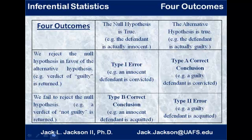You could also have a type B correct conclusion: if the defendant is actually innocent and a not guilty verdict is returned, that's also good. If the null hypothesis is true and we fail to reject it, that's a type B correct conclusion — an innocent defendant is acquitted. So type A correct conclusion is when the alternative hypothesis is actually true and we reject the null hypothesis in favor of the alternative. Another good result is the null hypothesis is true and we fail to reject it — type B correct conclusion.